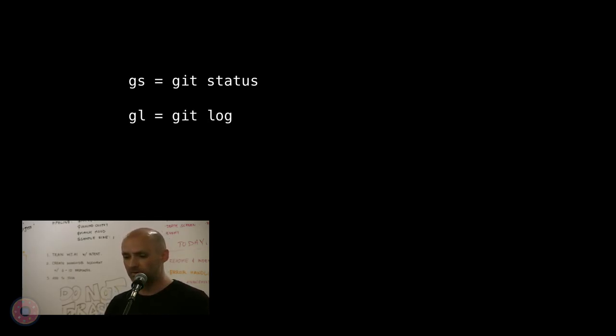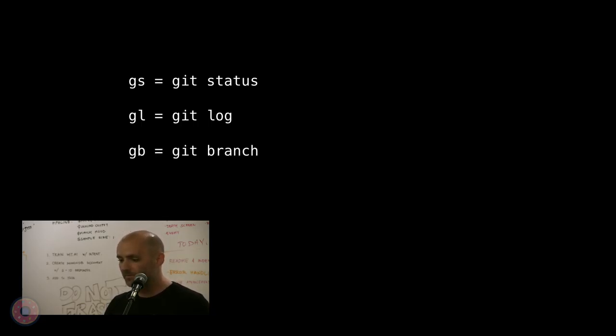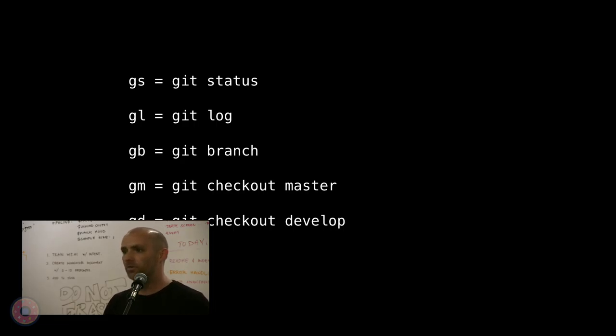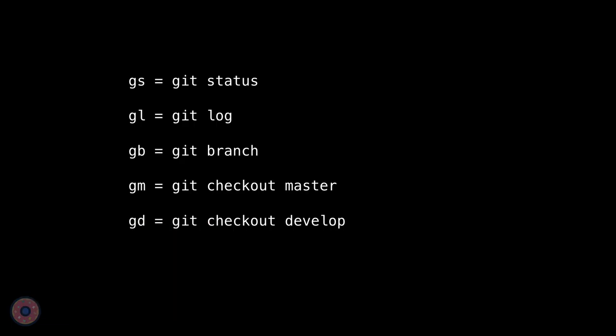Some things you might want to make aliases for are common git commands. I already mentioned git status. Git log is one I use all the time, so I just type gl. Git branch comes in really handy too. I like to have a couple aliases for quickly switching to common branches, so I just type a couple characters to switch back to master or develop. And since I'm obsessive, even git is too long to type, so I've abbreviated that to just g.